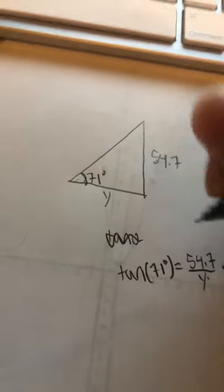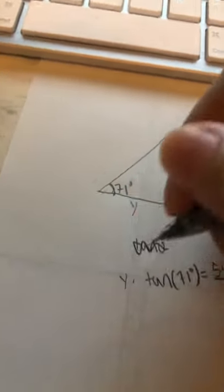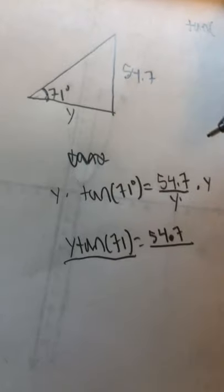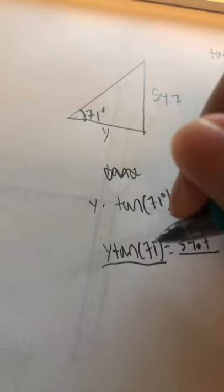And then we multiply y on both sides. So we get the following, and then to solve for y, we just divide by tan of 71 degrees.